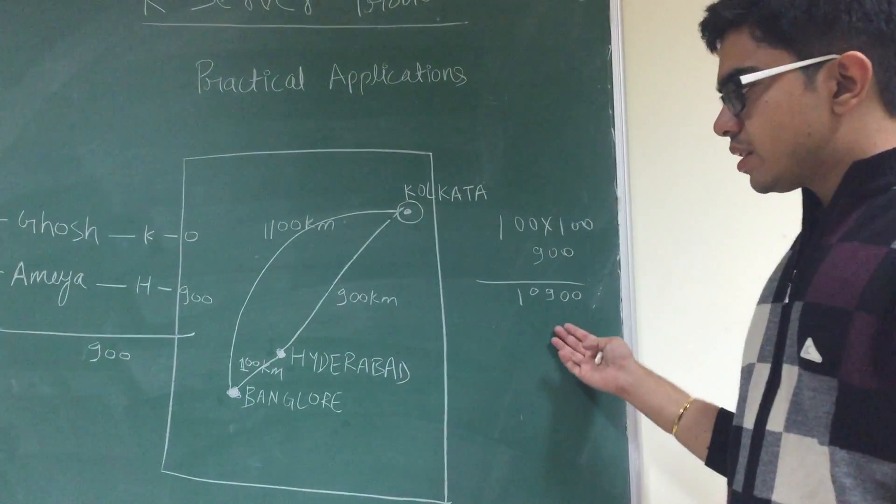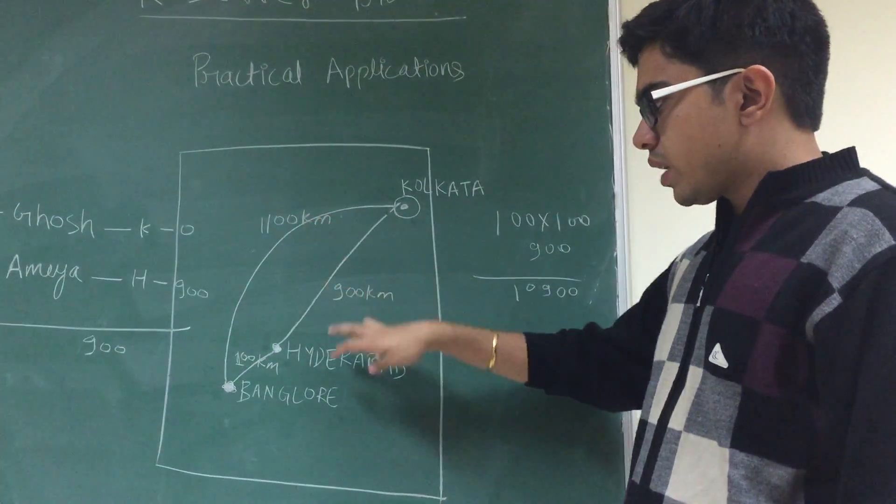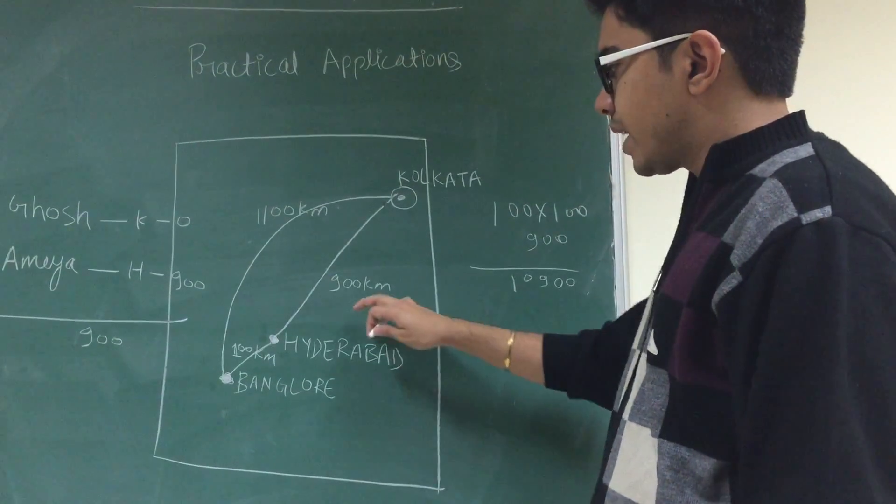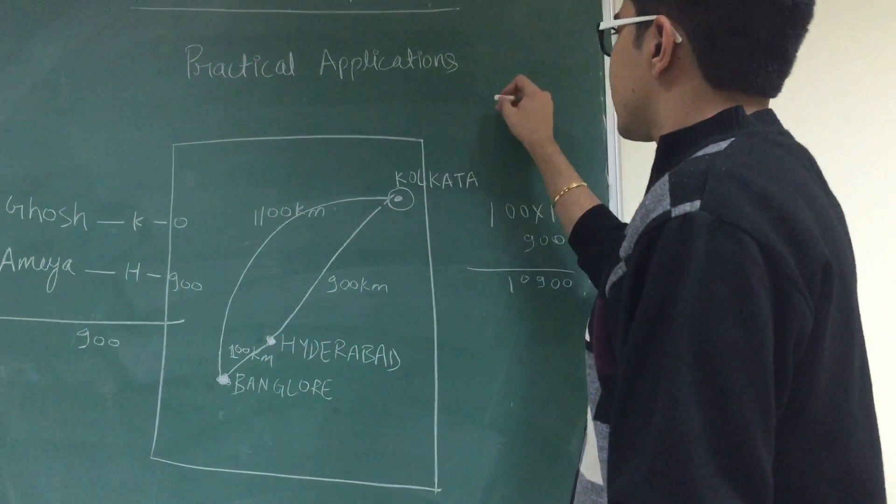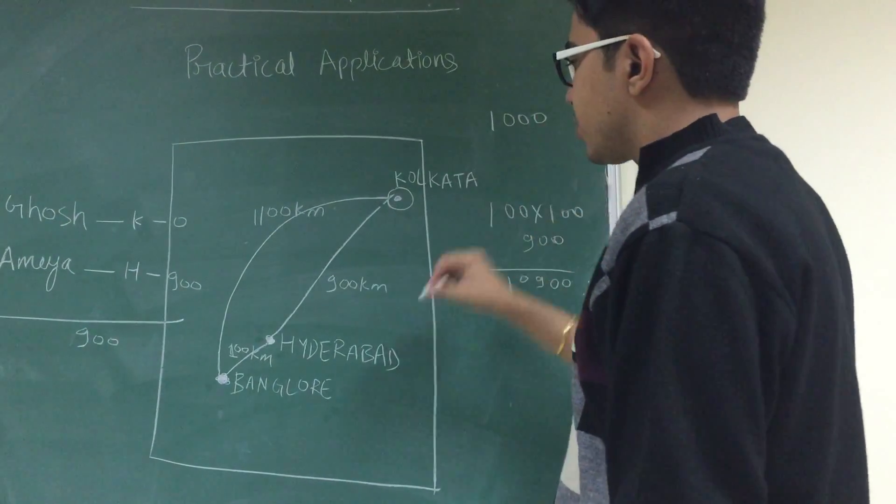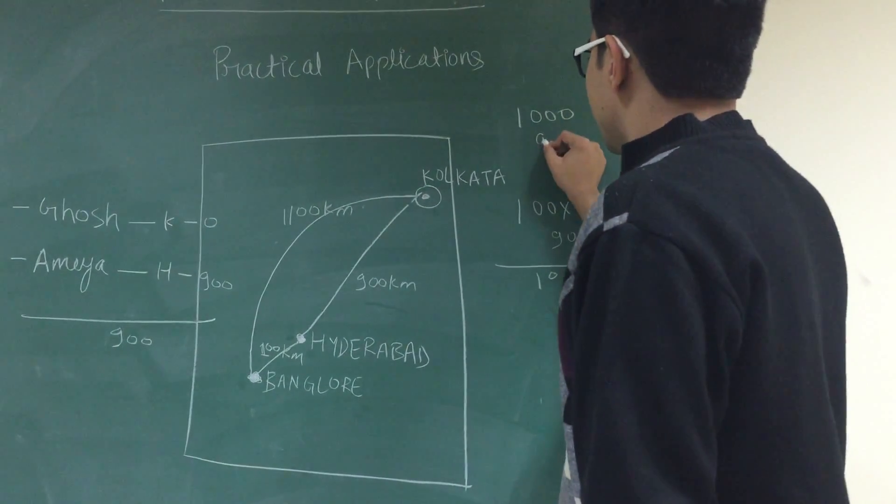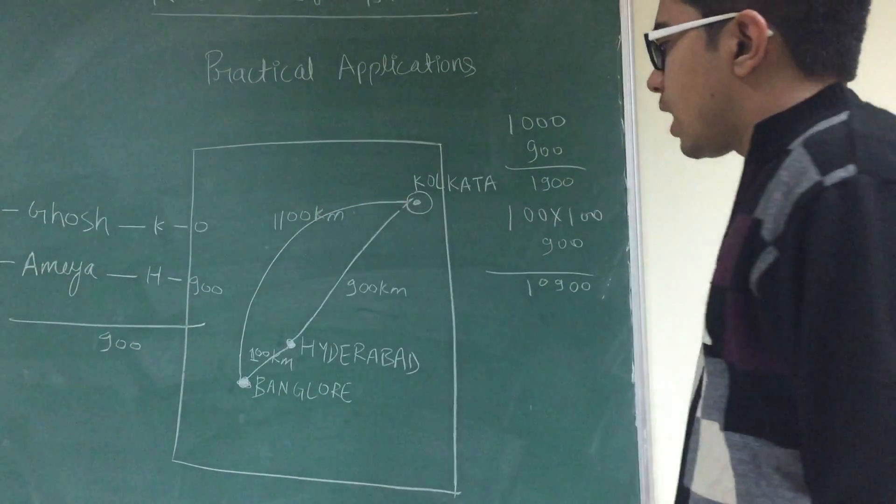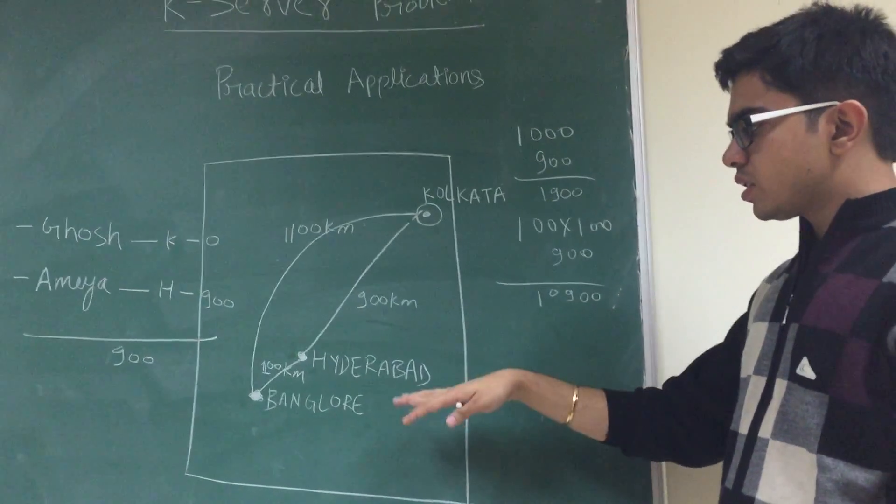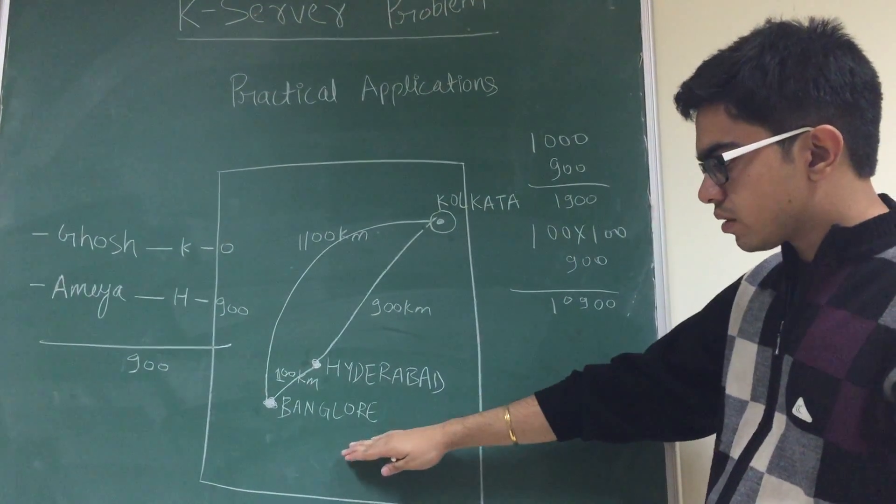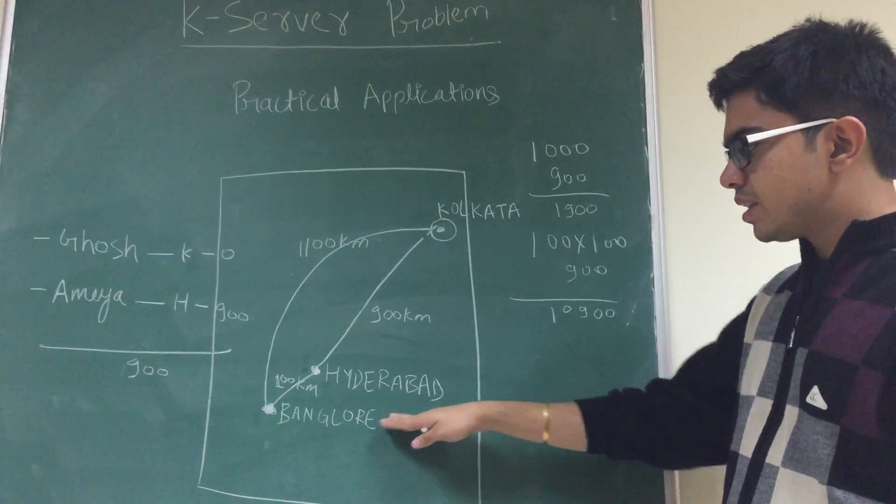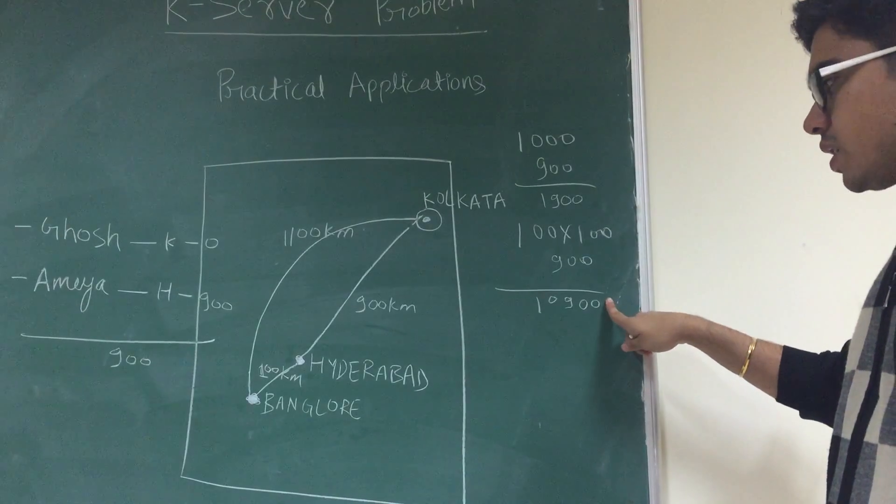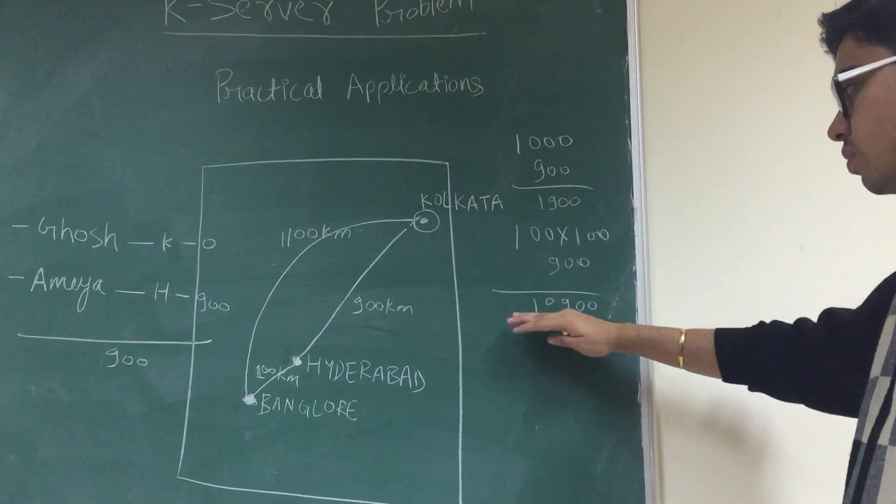Logically, what will be the optimal solution in this scenario? Let's say I send Ghosh to Hyderabad and Amya to Bangalore. The distance travelled by Amya will be 900 plus 100, which is 1000 kilometers. And the distance travelled by Ghosh will be 900 kilometers. So this is the total distance of 1900 kilometers. After that, for my successive days, since Ghosh has stayed in Hyderabad and Amya's stationed in Bangalore, they will be serving all the arriving requests in these cities. Thus, my optimal solution is 1900, which cannot be achieved by my greedy algorithm, which states the solution to be 10,900.